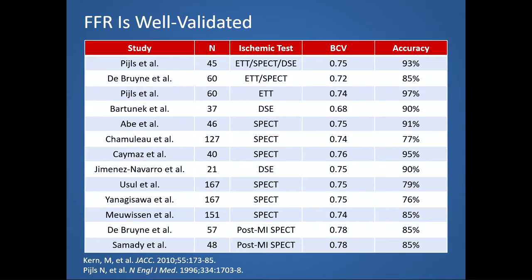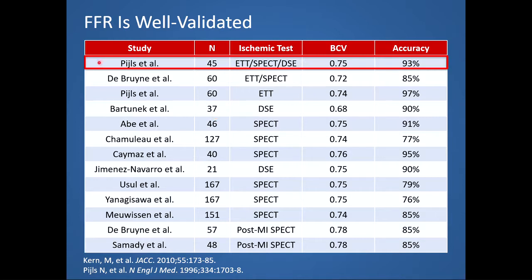FFR is well-validated. Shown in this table are numerous validation studies, their sizes, the modalities FFR was compared to, the best cutoff value, and the diagnostic accuracy for FFR. The first study by Nico Peels is considered the quintessential validation study because it compared FFR to electrical, perfusion, and functional measures of myocardial ischemia. It determined that sensitivity and specificity for detection of functional circumflex ischemia by FFR was 88% and 100% respectively when a patient underwent all three studies.